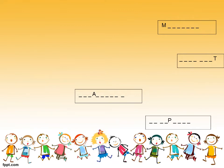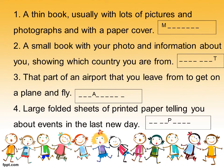The next game — I will not give you pictures. I will give you some letters and some sentences. You read the sentences, look at the letters, and find out what words they are. Are you ready? Very good! Let's look at the screen and read the sentences together. Number one: a thin book, usually with lots of pictures and photographs with a paper cover. Number two: a small book with your photos and information about you, showing which country you are from. Number three: the part of an airport that you leave from to get on a plane and fly. Number four: large sheets of printed paper telling you about events in the last few days. You have 10 seconds. Try your best!